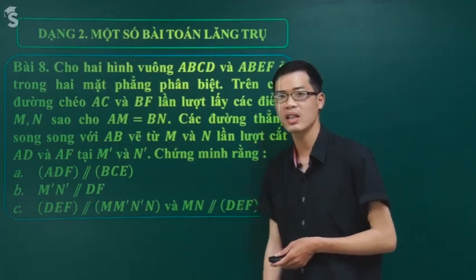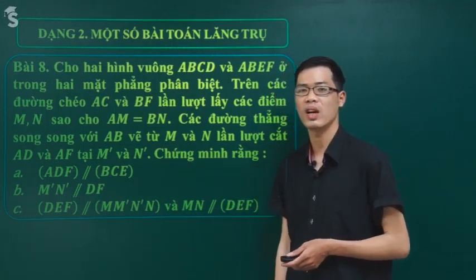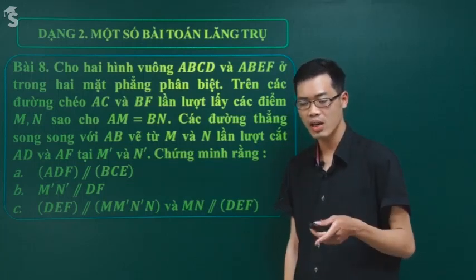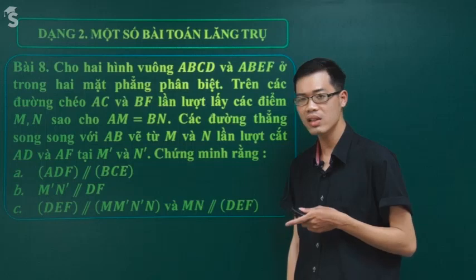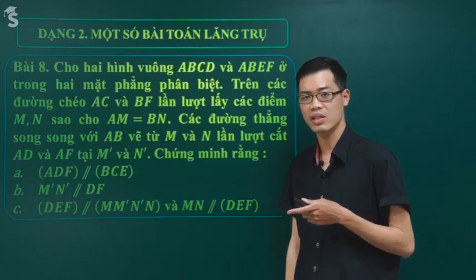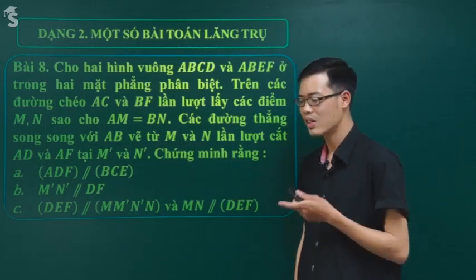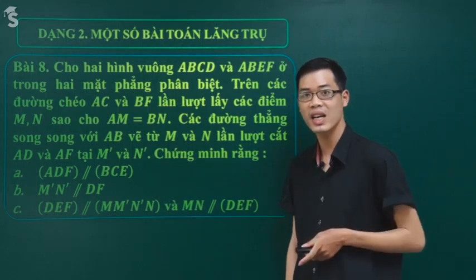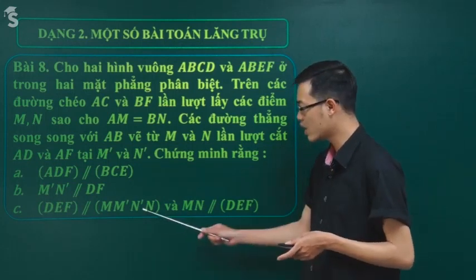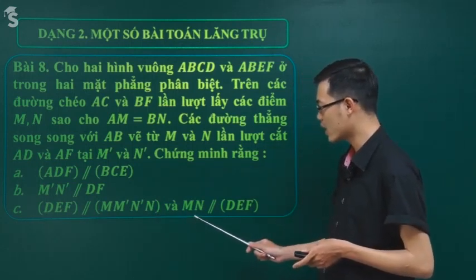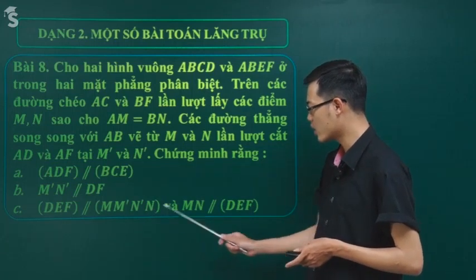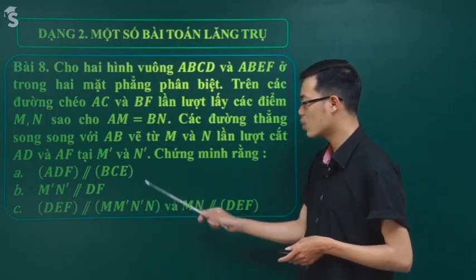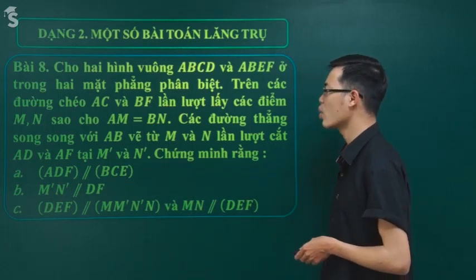Có một số ý là chúng ta đã tìm hiểu và biết cách làm từ tiết một rồi. Chúng ta đã nắm được phương pháp chứng minh hai mặt song song. Và từ đó khi hai mặt đã song song, kéo theo tính chất là mọi đường trong mặt này đều song song mặt kia. Câu C là dùng cái này rất chắc chắn.